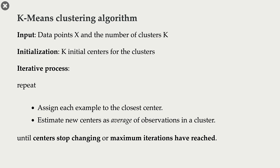The next step is this iterative process. We have random centers initially, and with these we do cluster assignments for all data points. Once we do that, we estimate new centers. With new centers, we again do cluster assignments and then estimate new centers again. If we do this several times, we converge to a reasonable solution. We repeat this until centers stop changing or maximum iterations are reached.